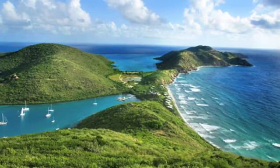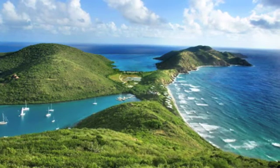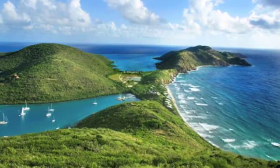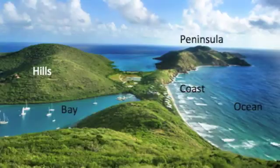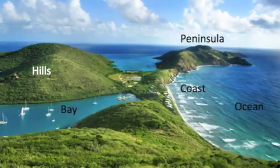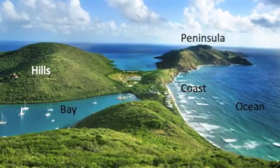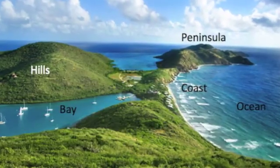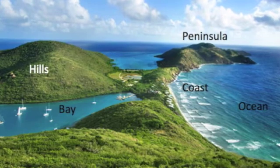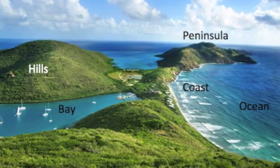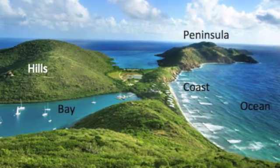This image shows us five landforms and bodies of water. Let's see if you found them. There are hills, a bay, a peninsula, a coast, and an ocean.